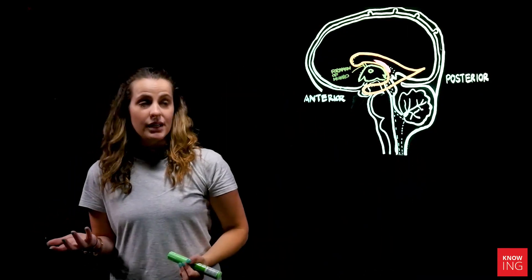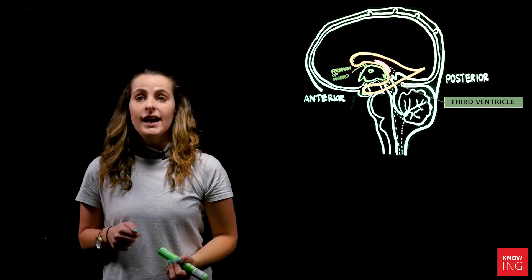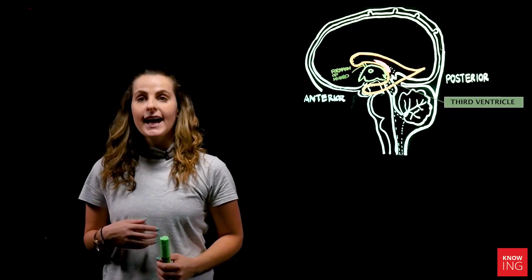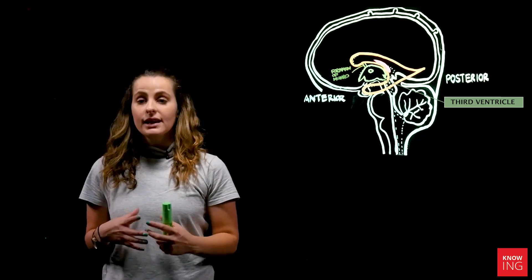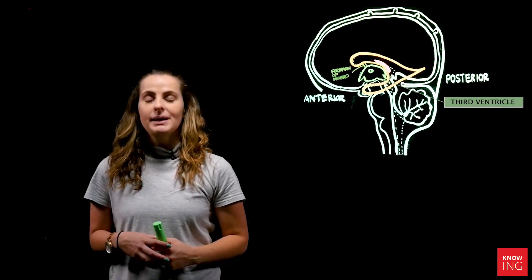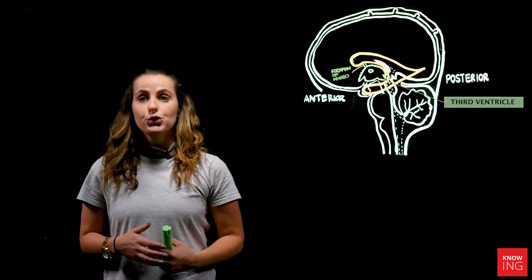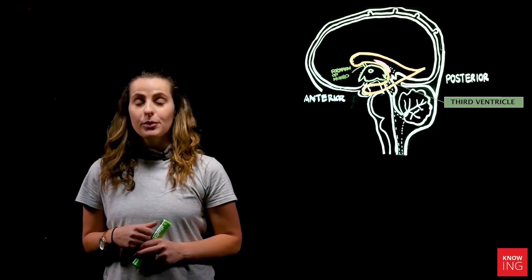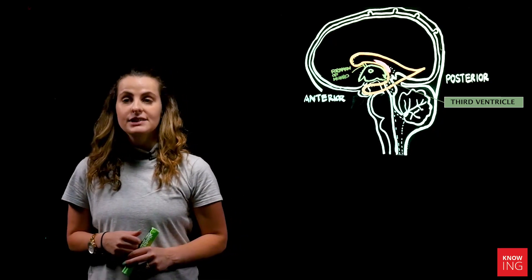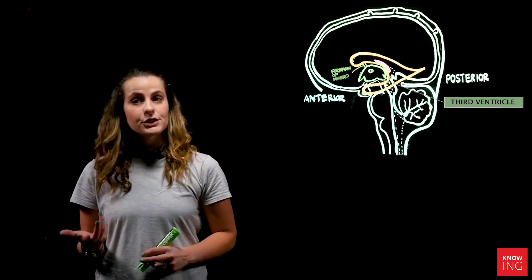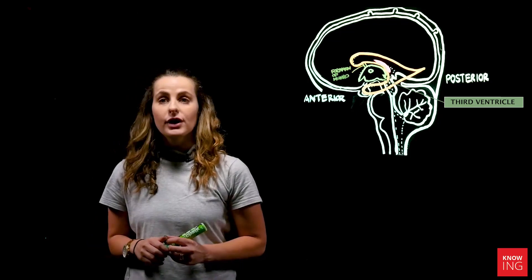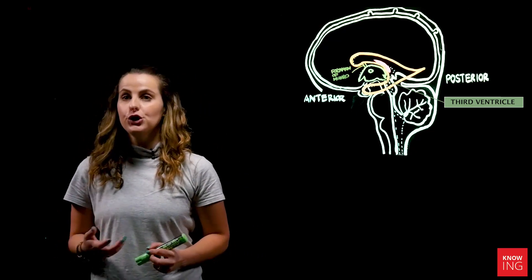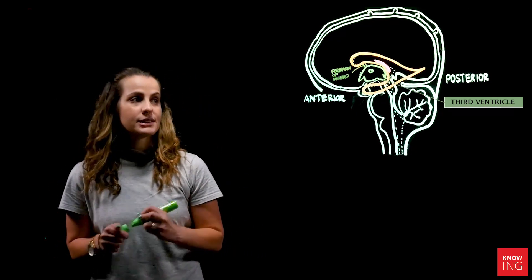In my opinion, the third ventricle looks a bit like the head of a bird. The third ventricle is located within the diencephalon, in relation to the thalamus and the hypothalamus. From here, CSF passes posterior and inferior, coursing along with the brainstem through a structure known as the cerebral aqueduct.